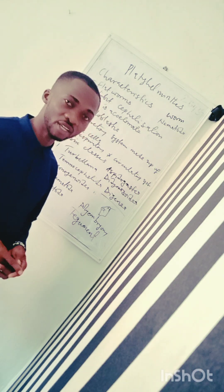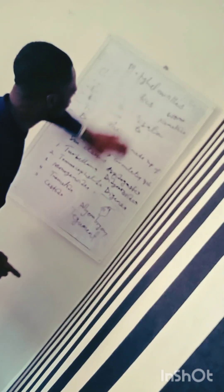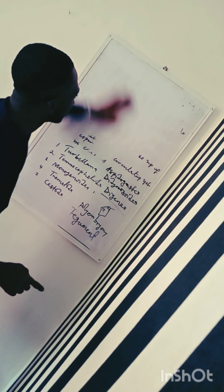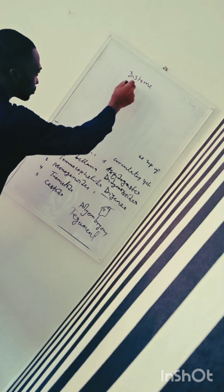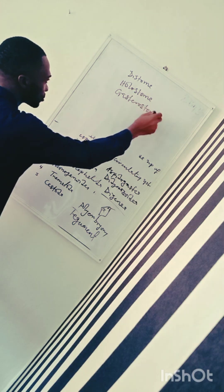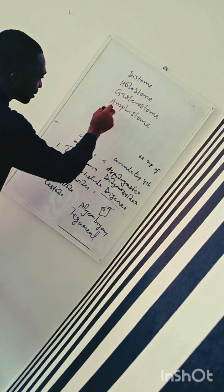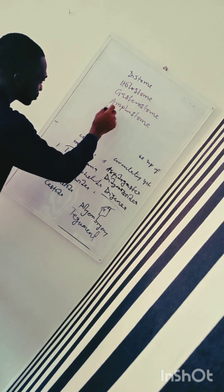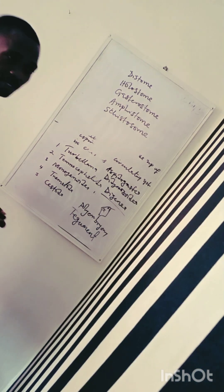The tegument serves two purposes: it protects the parasites against enzymatic digestion by the host, and it also aids in absorption of food. Members of this group exhibit different morphological body forms: the distome, the holosome, the gasterostome, and the amphistome.